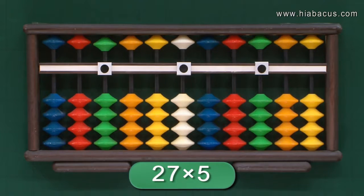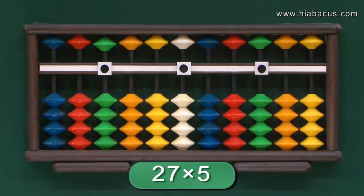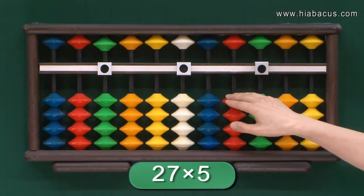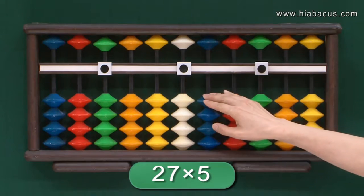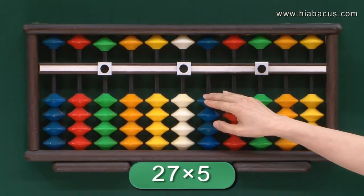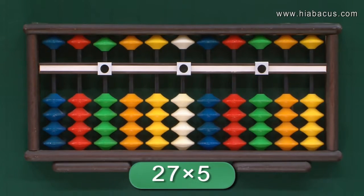Number 3: 27 times 5. It has a two-digit number and one-digit number, so the product is a three-digit number. We can start from the third place here — put your finger like this. In 27, we need to multiply the first number.